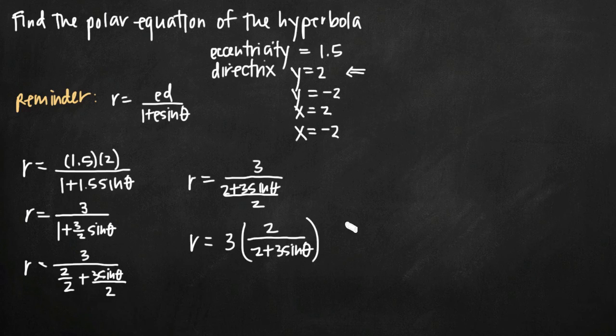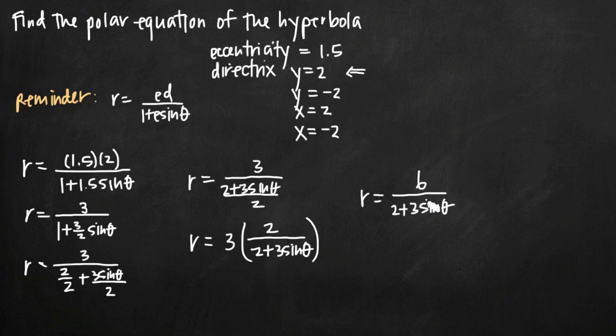And when we do that, we'll multiply 3 by 2 and we'll see that we get r equals 6 now in the numerator, divided by 2 plus 3 sine theta. And that's the simplified version of the polar equation of this hyperbola. This is our final answer given that we had a specific eccentricity and equation of the directrix.